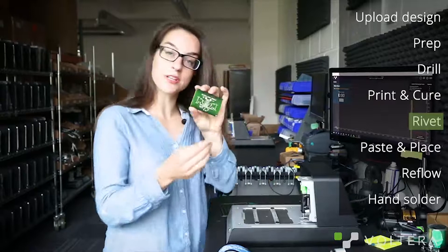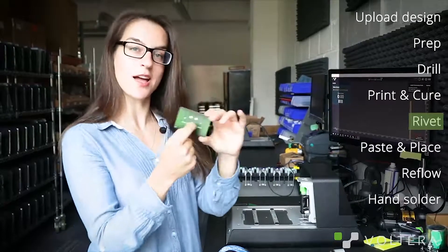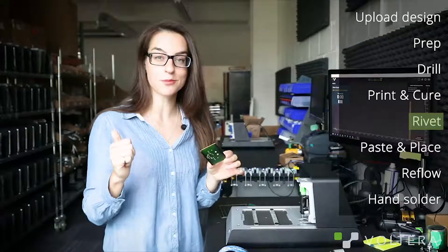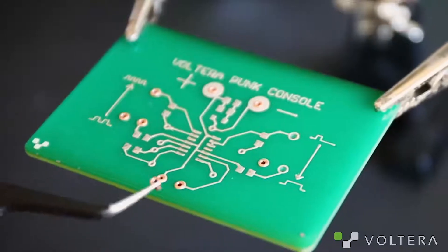So our traces are printed and cured onto both sides. Now I'm just going to pop in some rivets and use the riveting tool to secure them into place.